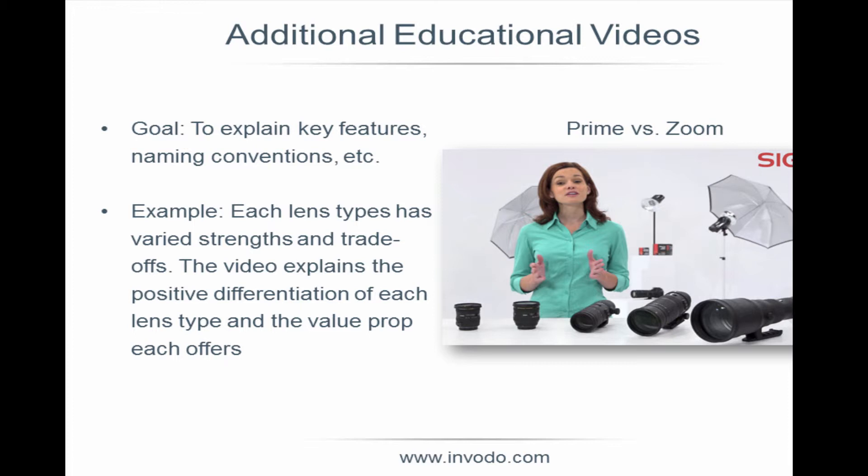We also made a series of informational videos that were product-agnostic or dealt with multiple products, to explain key features and different lens types — like what is the difference between a prime lens, a macro lens, or a zoom lens. Each lens has its strengths and we focused on positive differentiation: every lens is a compromise, so you choose a lens for specific reasons. That big fast f2.8 lens is 8 pounds and $3,000-plus; the other is smaller, more compact, slower, less light-gathering, but fits in your bag without needing a Sherpa.